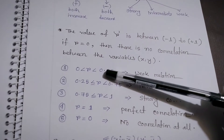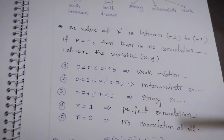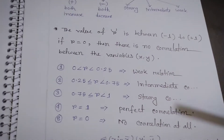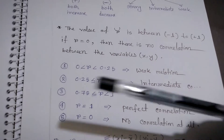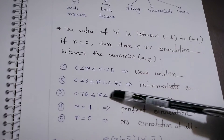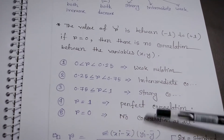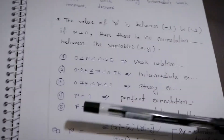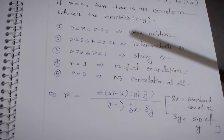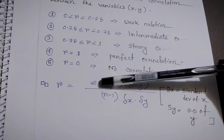To measure strength: if r is greater than 0 and less than 0.25, there is a weak relation. From 0.25 up to 0.75 is called intermediate correlation. When r is greater than or equal to 0.75 but less than 1, it is a strong correlation. When r equals 1, it is perfect correlation, and when r equals 0, there is no correlation.